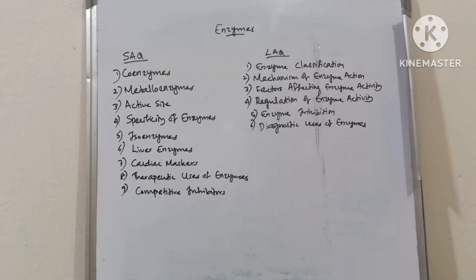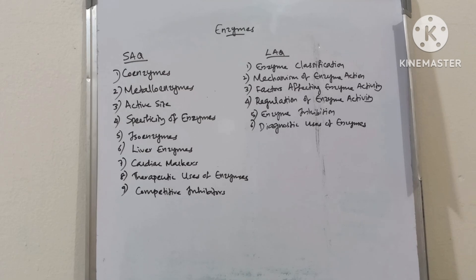Enzymes, short answer questions: coenzymes, metalloenzymes, active site, specificity of enzymes, isoenzymes, liver enzymes, cardiac markers, therapeutic uses of enzymes and competitive inhibitors.